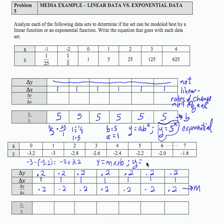So y equals 0.2x, and then my b value is my starting value. When the input is 0, the output is negative 3.2. So here is my linear equation that best models the given data set.